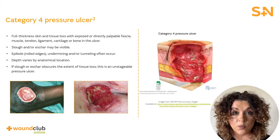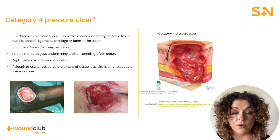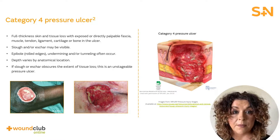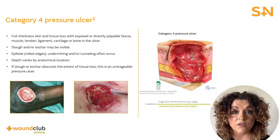Category 4 pressure ulcers are classified as full thickness skin and tissue loss with visible bone, muscle or tendon. There may also be slough and eschar present and undermining or tunneling is common.